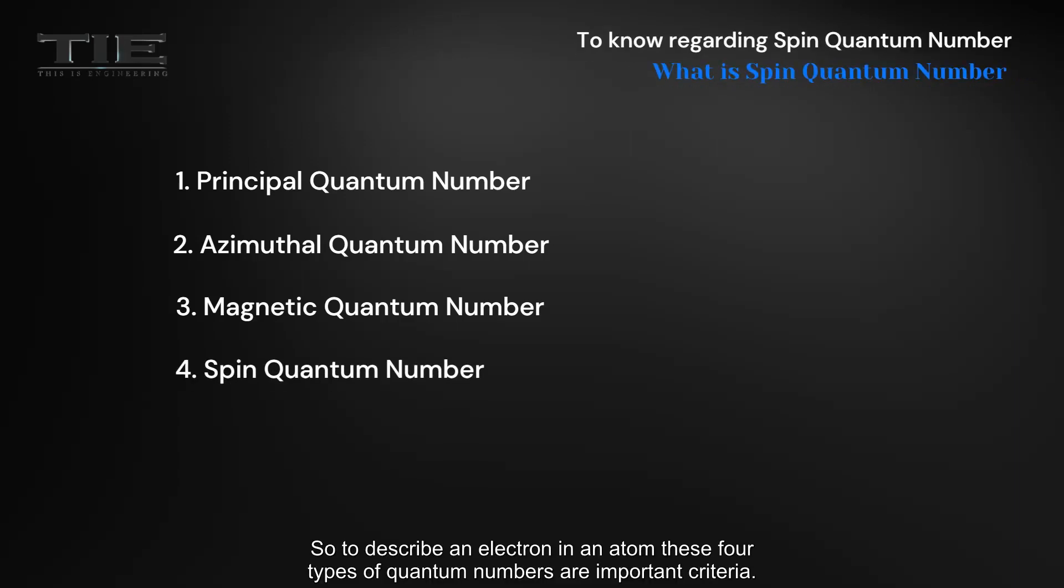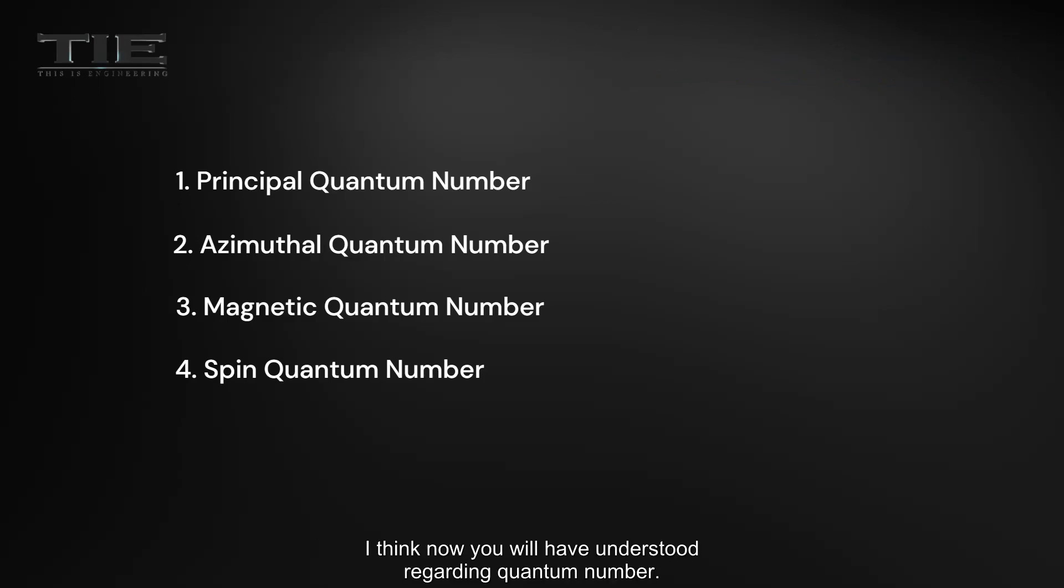So, to describe an electron in an atom, these four types of quantum numbers are important criteria. I think now you will have understood regarding quantum number.